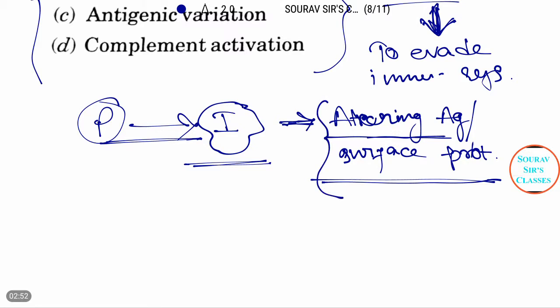The alteration of surface protein is called antigenic variation, antigenic variation, okay.